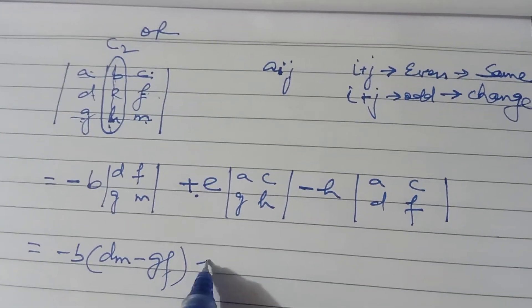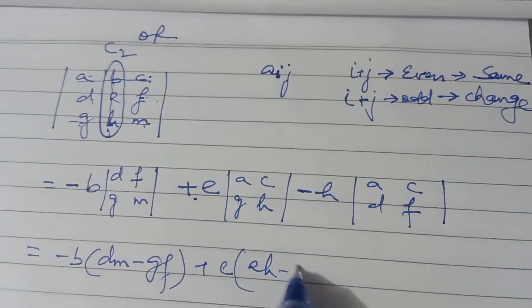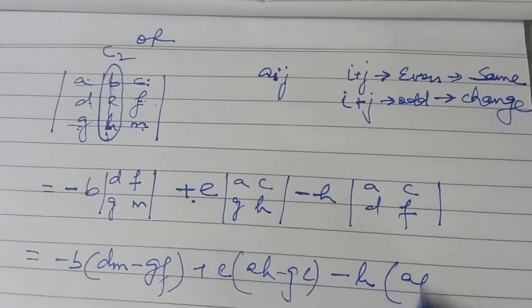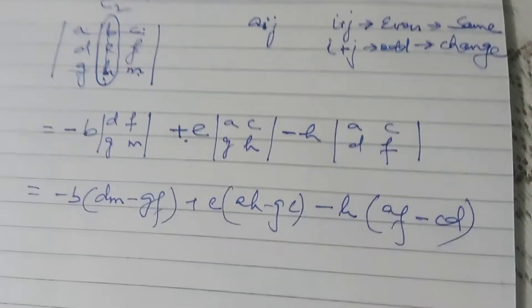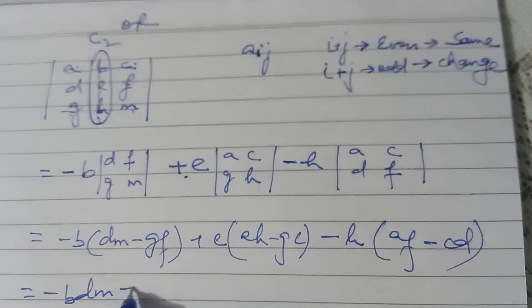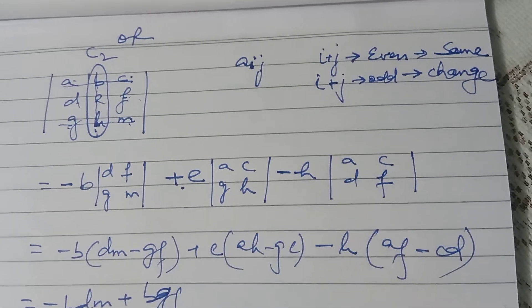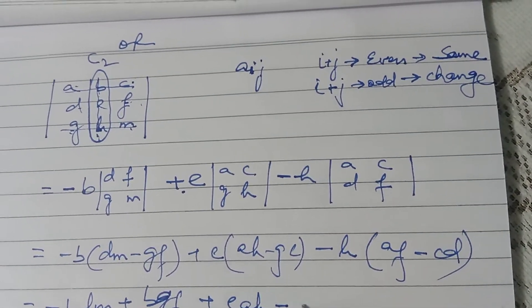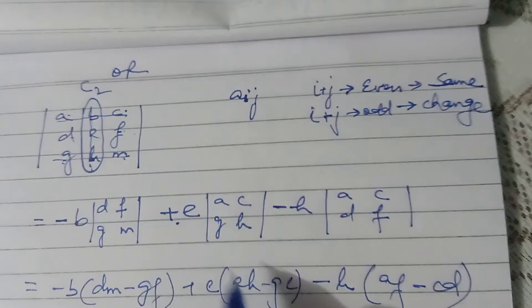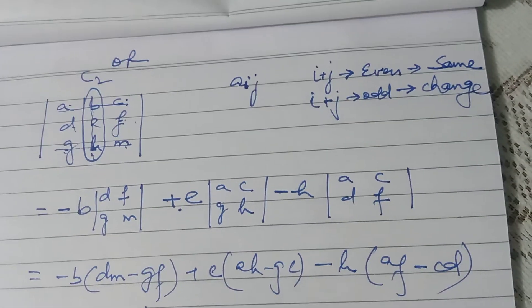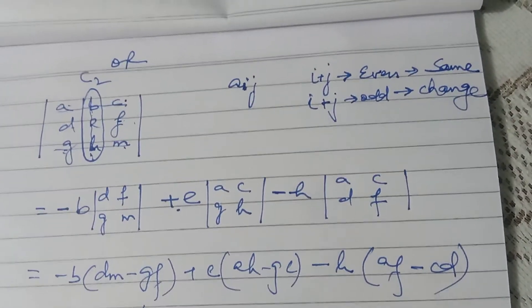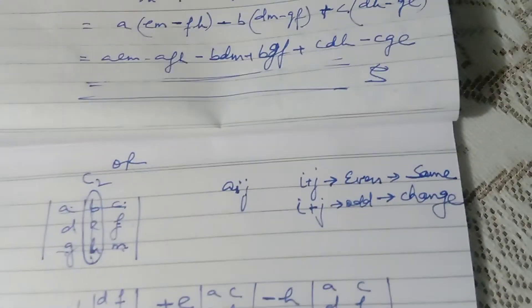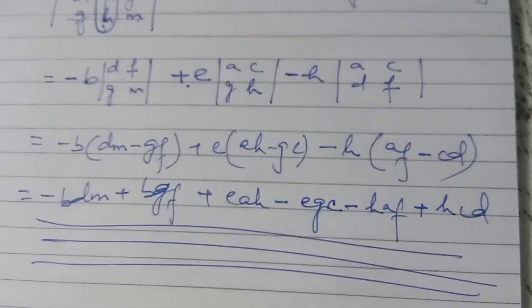Applying the signs, the expansion by the second column gives: minus B·(DM minus GF), plus E·(AM minus GC), minus H·(AF minus CD). You can expand this further: minus B·D·M plus B·G·F, plus E·A·M minus E·G·C, minus H·A·F plus H·C·D. You can verify that this gives the same value as the Row 1 expansion.